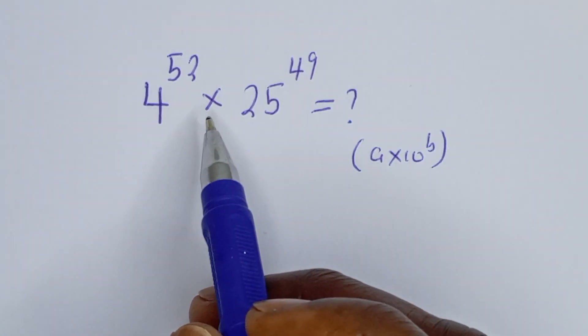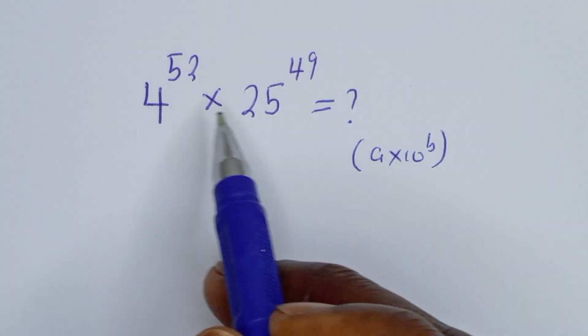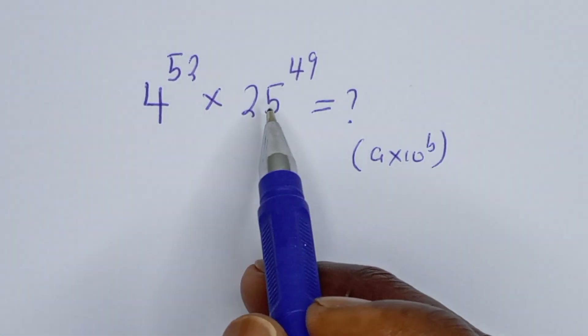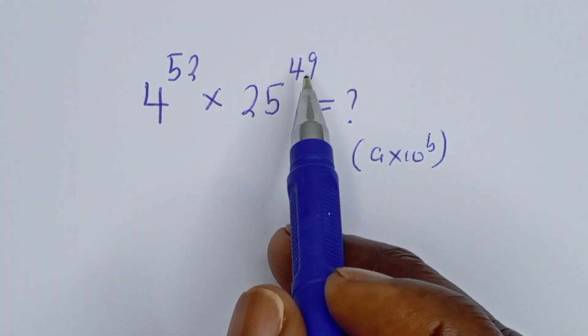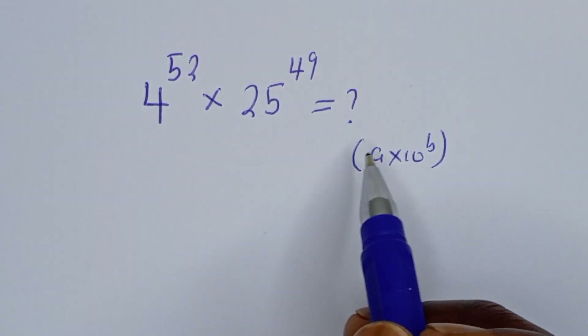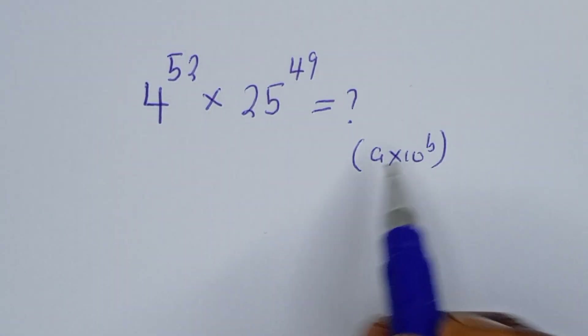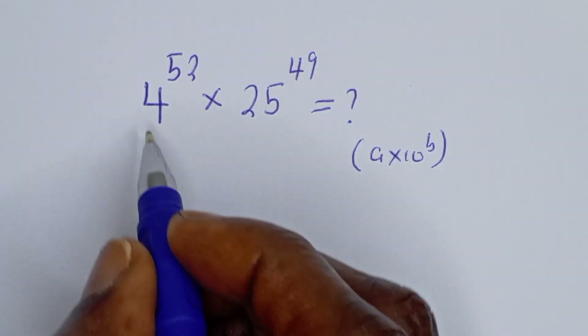Hello, how to simplify this nice math problem: 4 to the power of 52 multiplied by 25 to the power of 49, and we are going to write our answer in standard form A multiplied by 10 to the power of B.